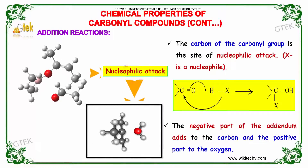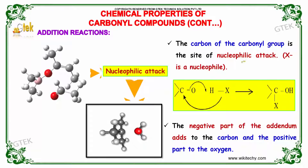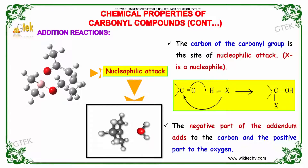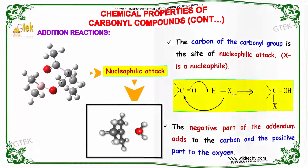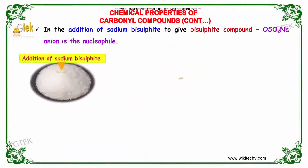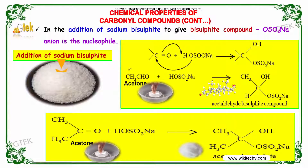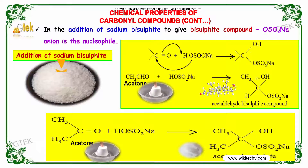Addition reactions: The carbon of the carbonyl group is the site of nucleophilic attack. The negative part of the addendum adds to the carbon and the positive part to the oxygen. In the addition of sodium bisulfate to give a bisulfate compound, the OSO₂Na⁻ anion is the nucleophile. As we can see here, acetone when reacted with OSO₂Na produces the acetaldehyde bisulfate compound.